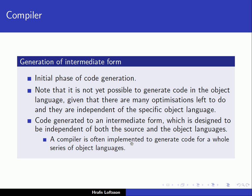A compiler is often implemented to generate code for a whole series of object languages. If we want to generate code for many different object languages, it's a very good idea to generate intermediate code first, and then let the backend generate the appropriate object language from this intermediate code. This way, the frontend of the compiler doesn't have to worry about the underlying machine — it just generates intermediate code — and then specific backend modules generate the appropriate machine or object language using the intermediate code as input.